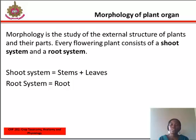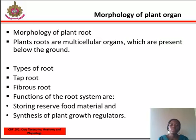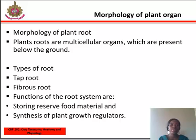Moving on to morphology of plants: morphology is the study of the external structure of plants and their parts. Every flowering plant consists of a shoot system and a root system. The shoot system is made up of stems and leaves, while the root system is made up of roots only. Plant roots are multicellular organs present below the ground. Roots are developed from radicles of the embryo of a germinating seed in the majority of dicotyledonous plants. The direct elongation of the radicle leads to the formation of primary roots, which grow inside the soil.